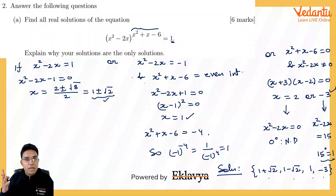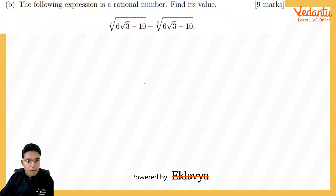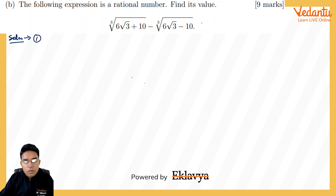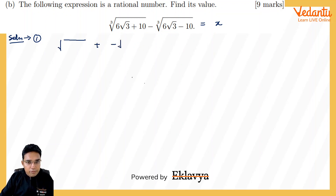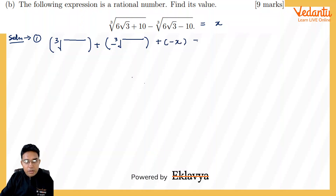Now for part B: the following expression is a rational number — find its value. I have two or three methods; let me explain them one by one. Method 1: let the expression equal x. We can write it as ∛(6√3+10) + (negative of ∛(6√3-10)) + (-x) = 0, with the three cube-root terms summing to zero.